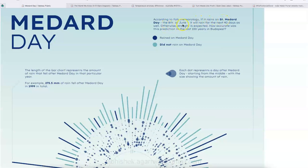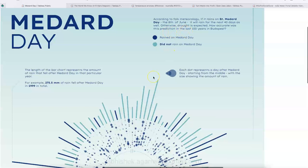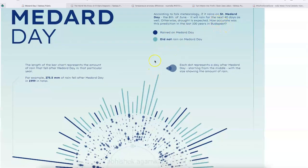If it rains on St. Medard Day, the 8th of June, it will rain for next 40 days as well. Otherwise, drought is expected. So based on this Folk Metrology, the visualization was created.